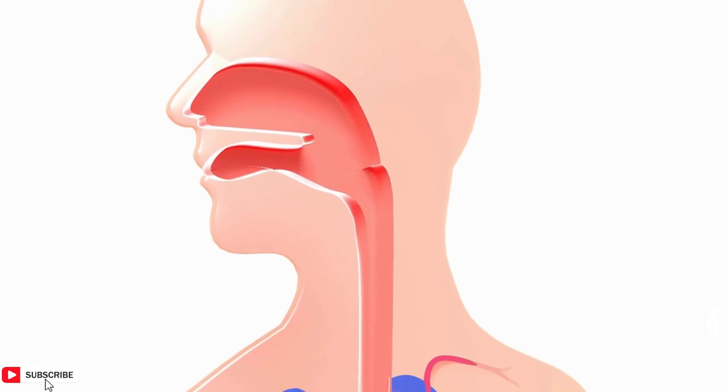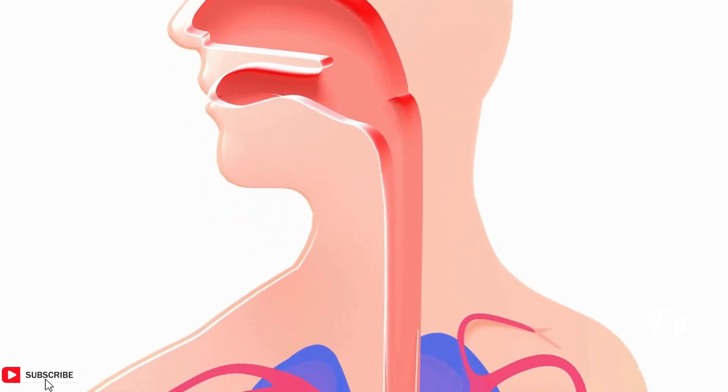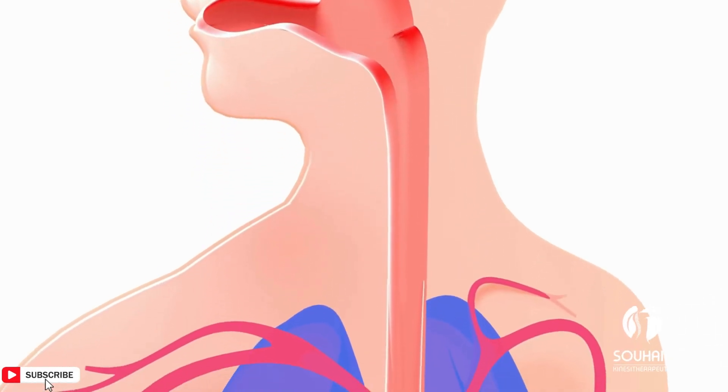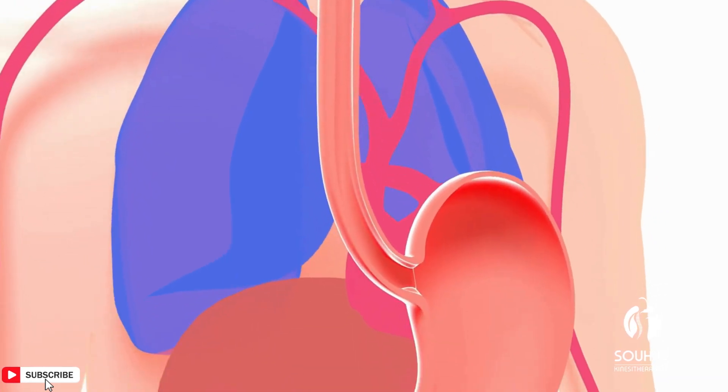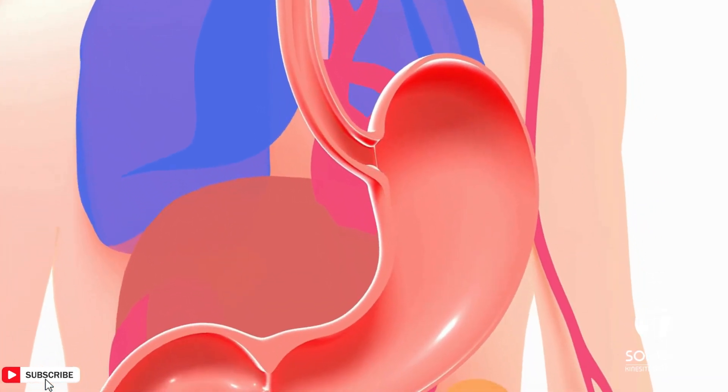Esophagus. After chewing, food is swallowed and travels down the esophagus, a muscular tube that connects the mouth to the stomach.